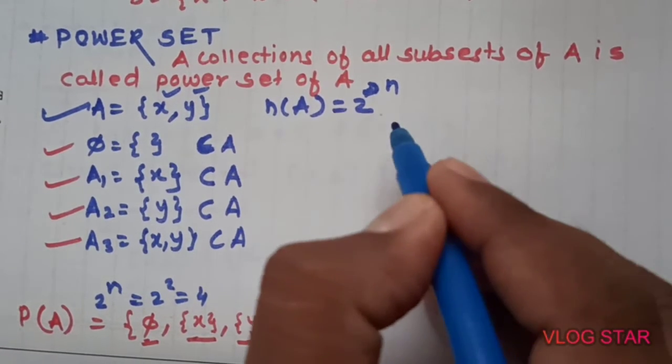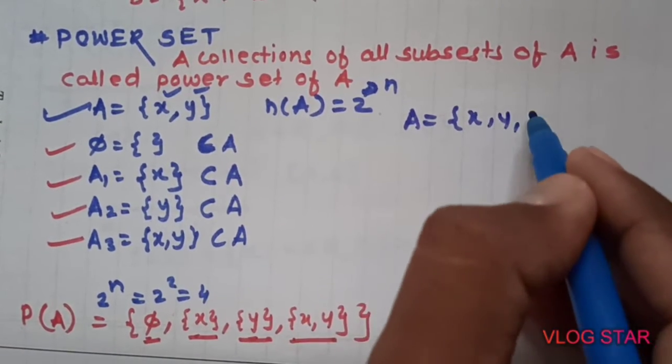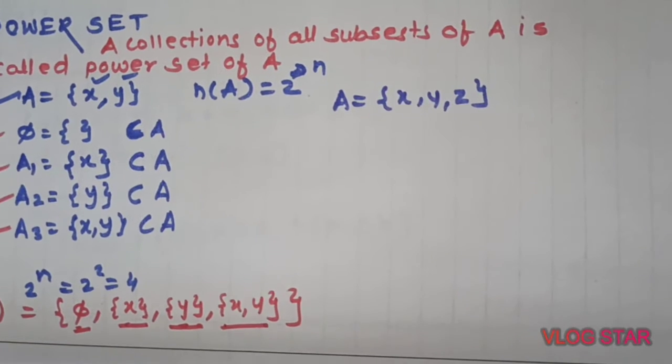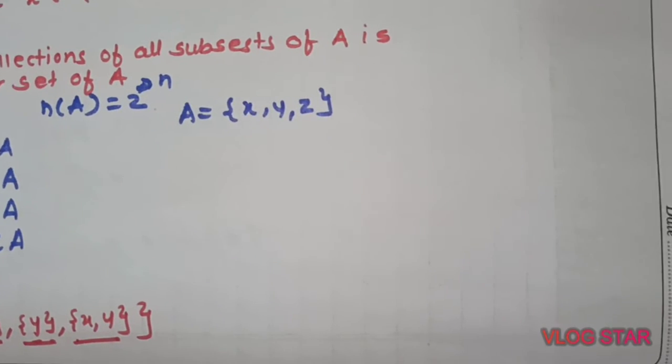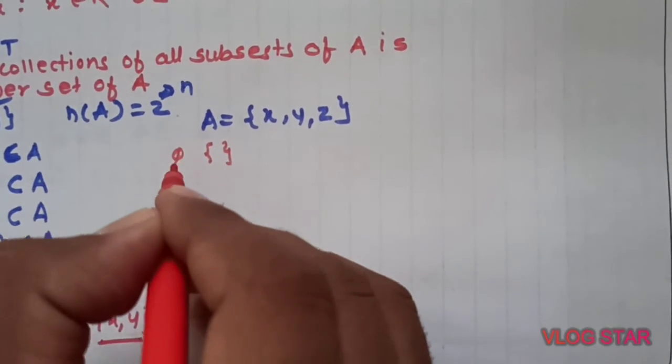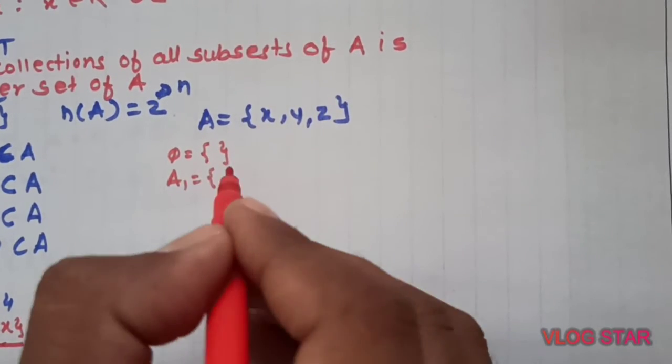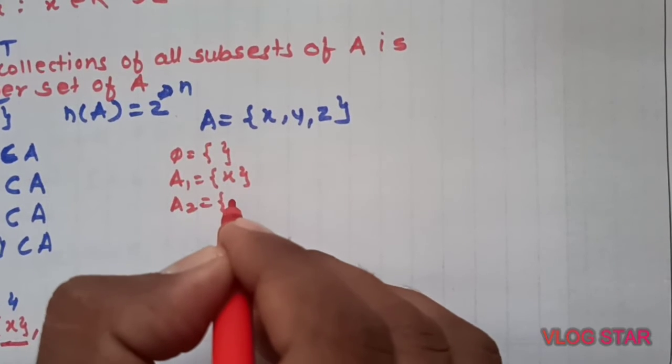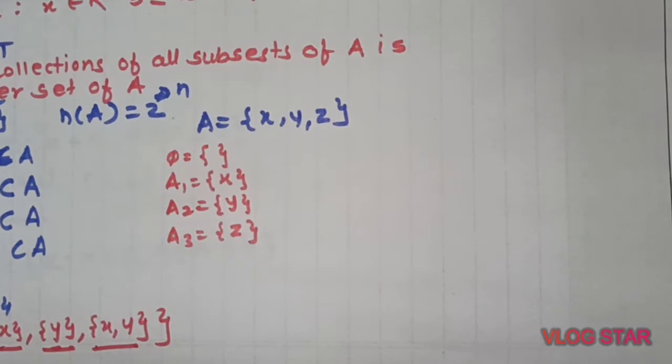In case we consider A as having three elements x, y, z, now the number of subsets are more. First as usual, empty set phi. A1, one member set, only x. A2, one member, only y. A3 is only z.